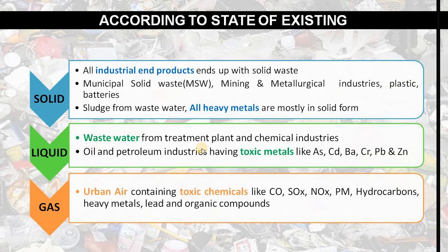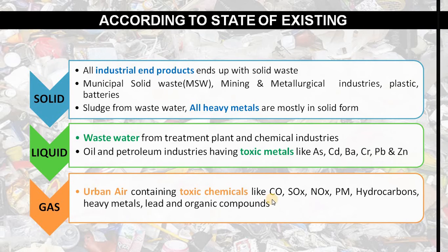Coming on to the second, which is liquid waste — wastewater that comes from chemical plants, treatment plants, and chemical industries. The oil and petroleum industries have toxic metals such as Cd, Ba, Cr, Pb, and Zn.